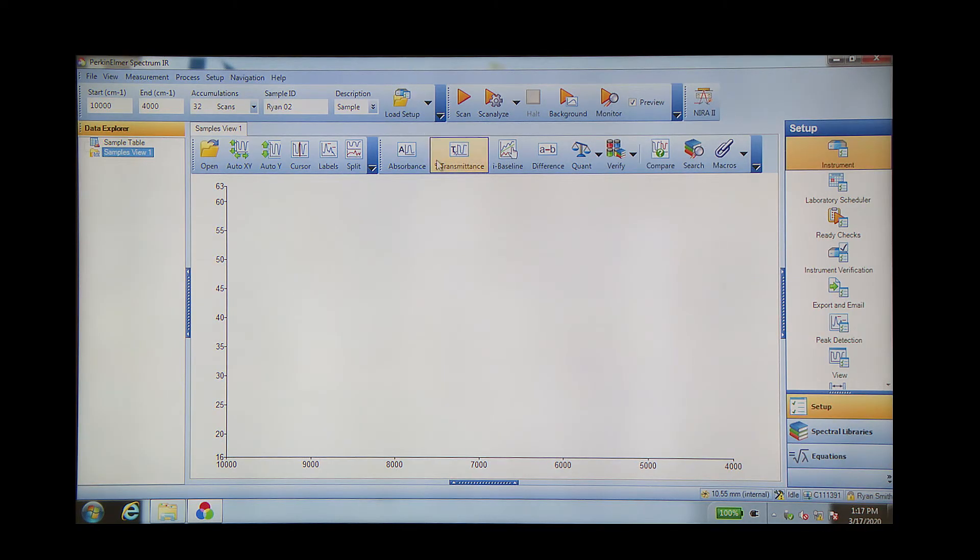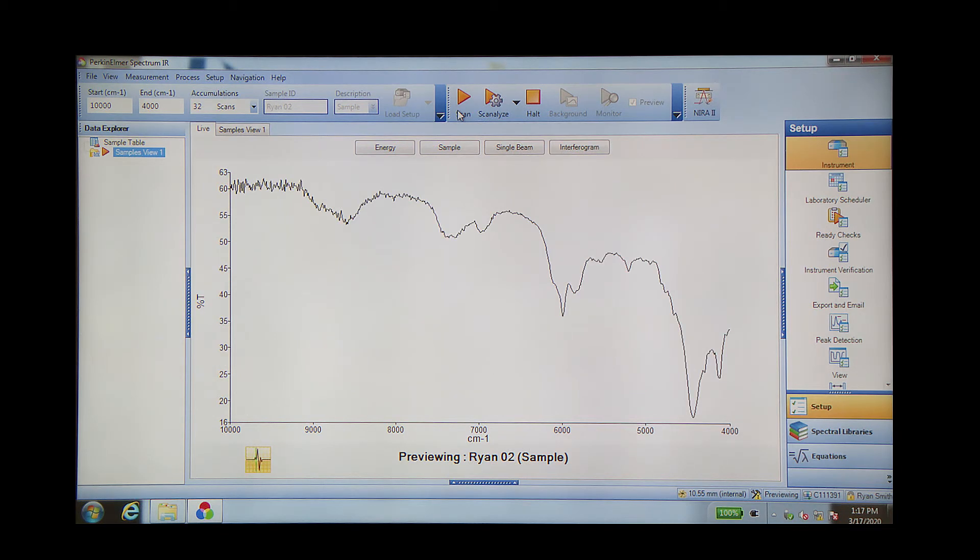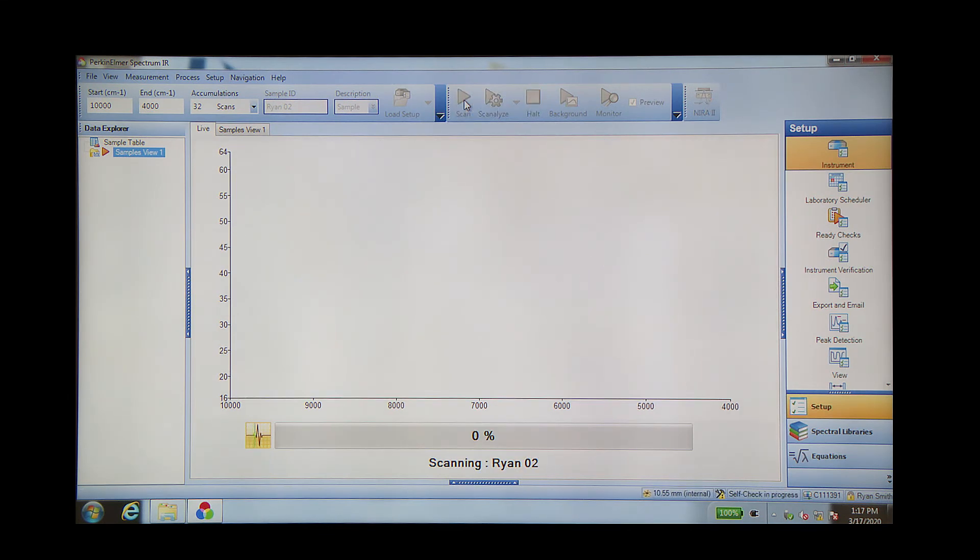Once we have our sample information entered in the software, we press the Scan button. The software provides the option of viewing a preview, which will show the near-infrared spectrum as measured in real time. If the sample is positioned correctly, we will see a usable near-infrared spectrum. Once we're happy with this, we can press the Scan button again, at which point we will go from the preview to measuring and saving the sample spectrum.